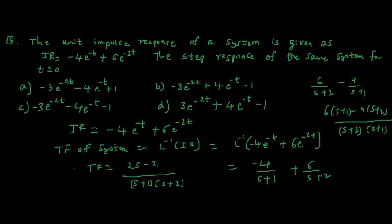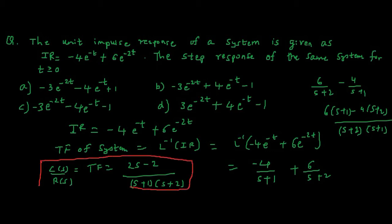So this is the transfer function H(s) = (2s minus 2) upon (s plus 1)(s plus 2). Now we need to find the step response, which means we need to find C(s) when R(s) equals 1 over s — the step input — instead of an impulse.